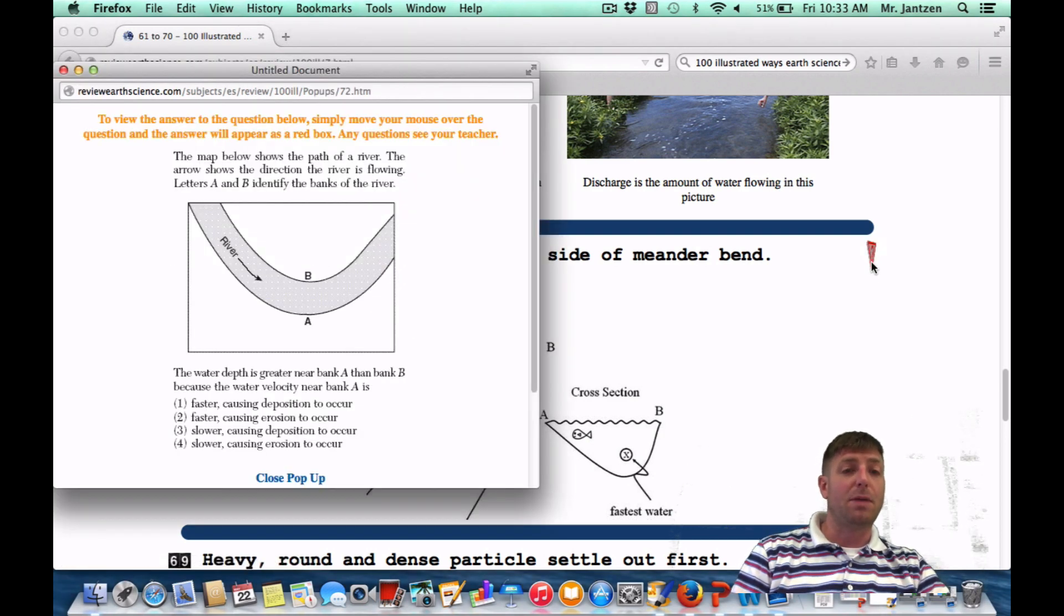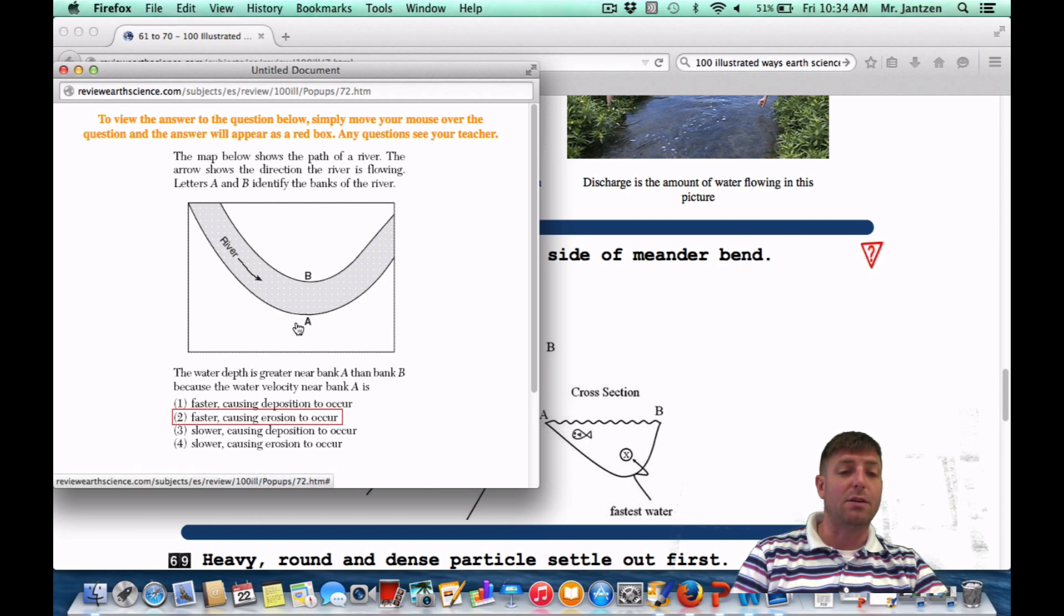Map below shows the path of a river. The arrow shows the direction the river is flowing. Letters A and B identify the banks of the river. The water depth is greater near bank A than bank B because the water velocity near A is what? Well, it's going to be a lot faster here. And that's where all your erosion is going to be.